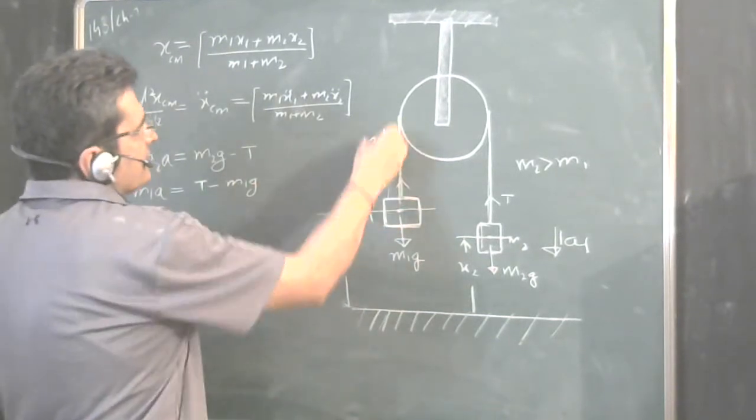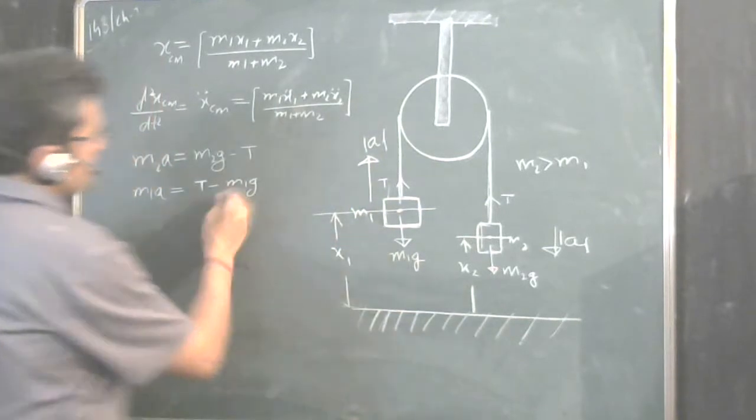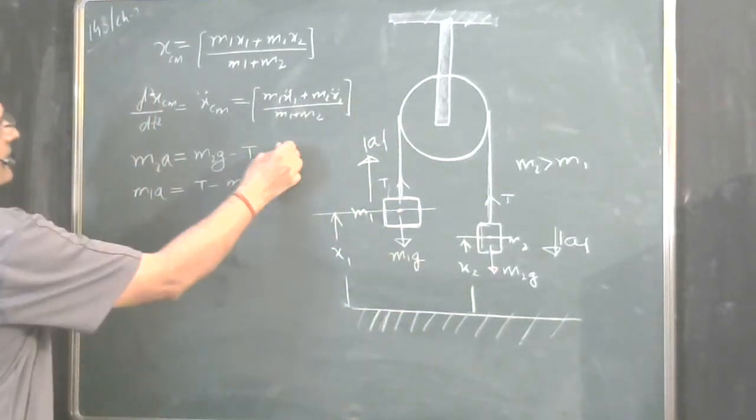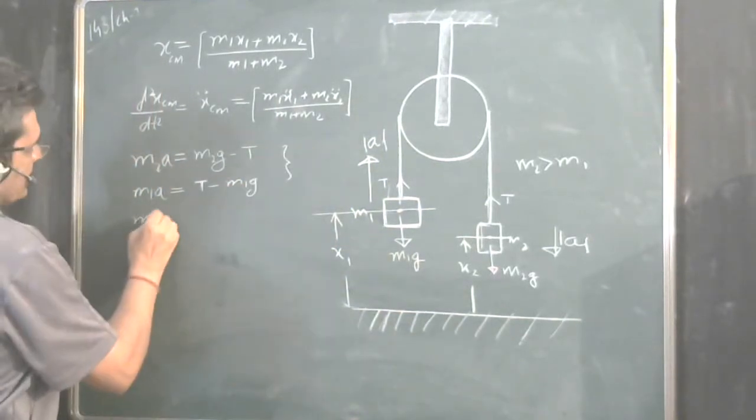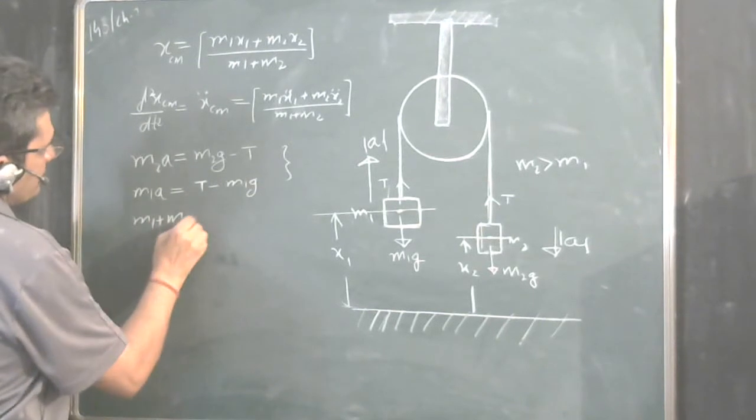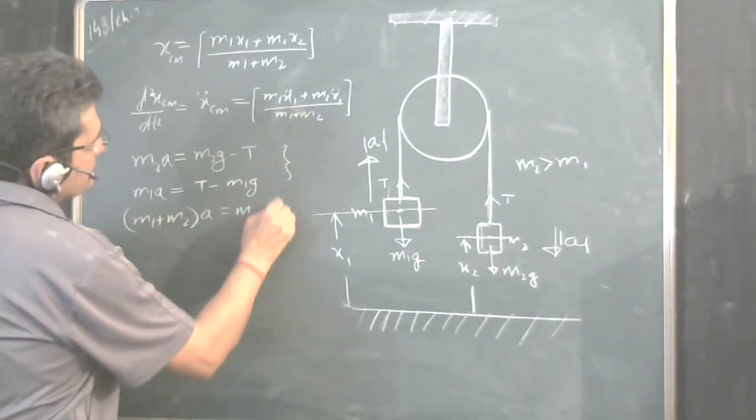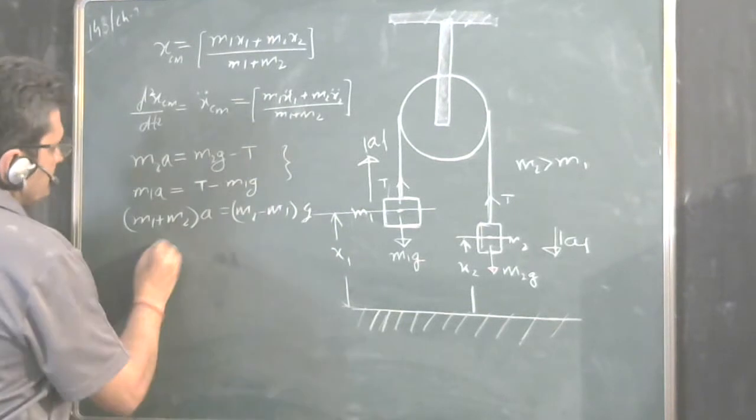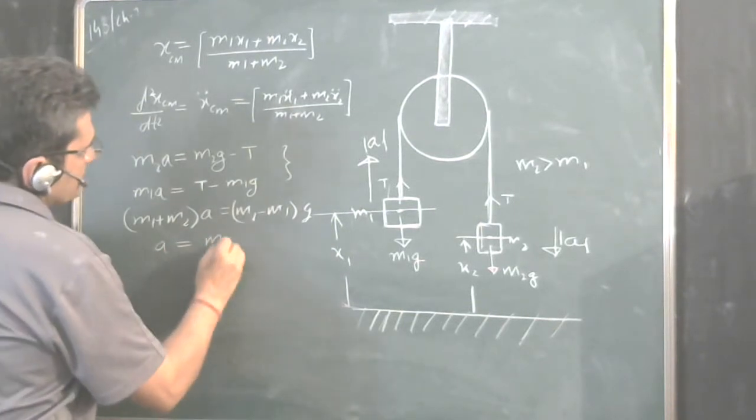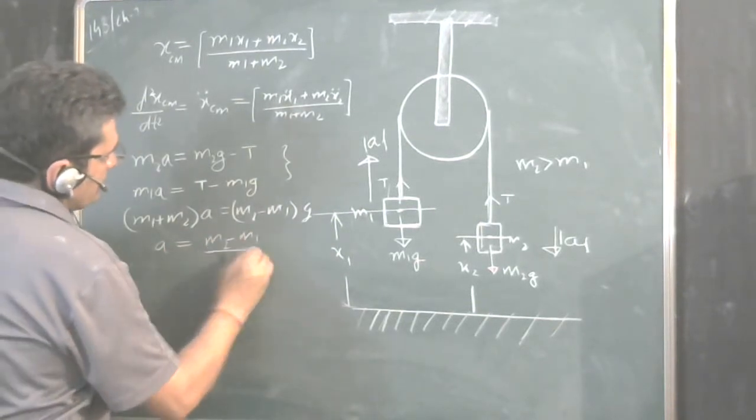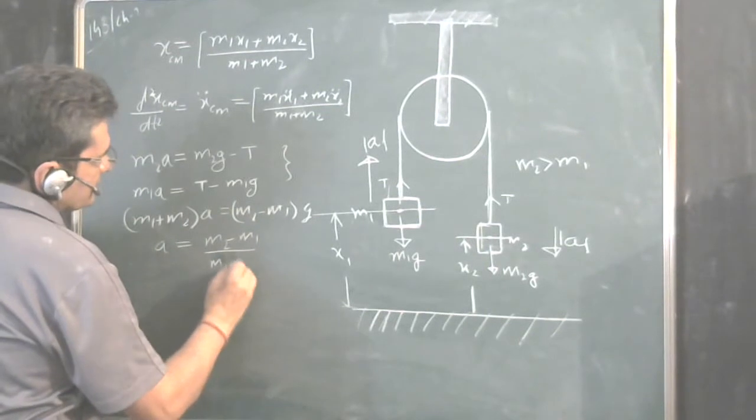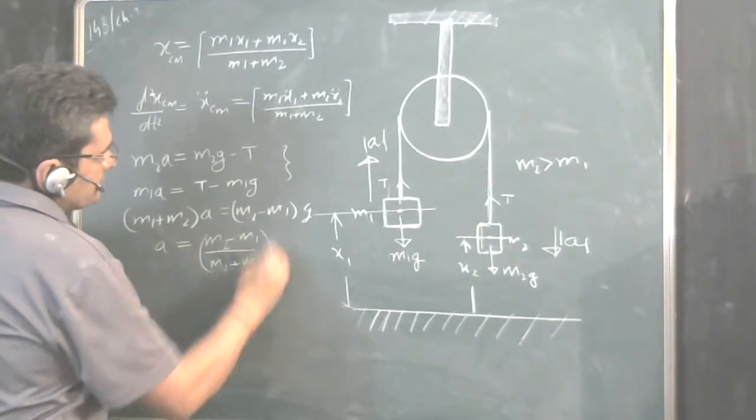Because T is towards this direction, Mg is opposite. So, we have taken like this. Add these two equations, you get M1 plus M2 into A is equal to M2 minus M1 into G. So, A is equal to M2 minus M1 upon M2 plus M1 into G.